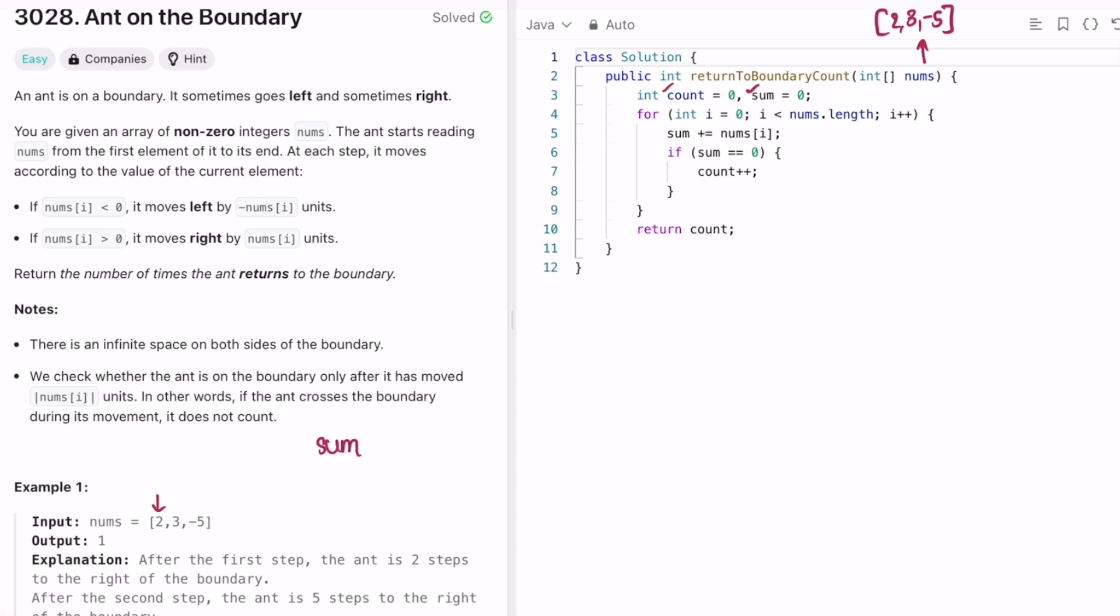So sum is equal to zero initially, and now we add two to it. So sum becomes two. And now we have to check in each step if sum is equal to zero. If that is the case, count will be incremented. So count was initially zero, right. Now we check if this is equal to zero. No.